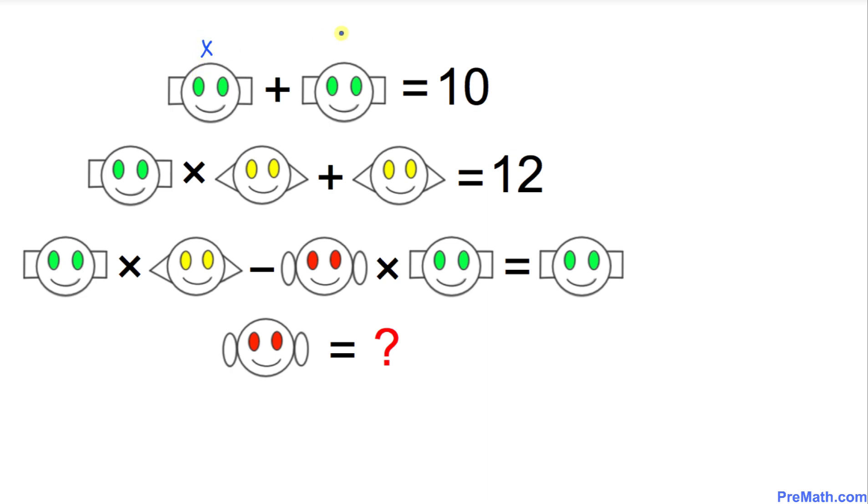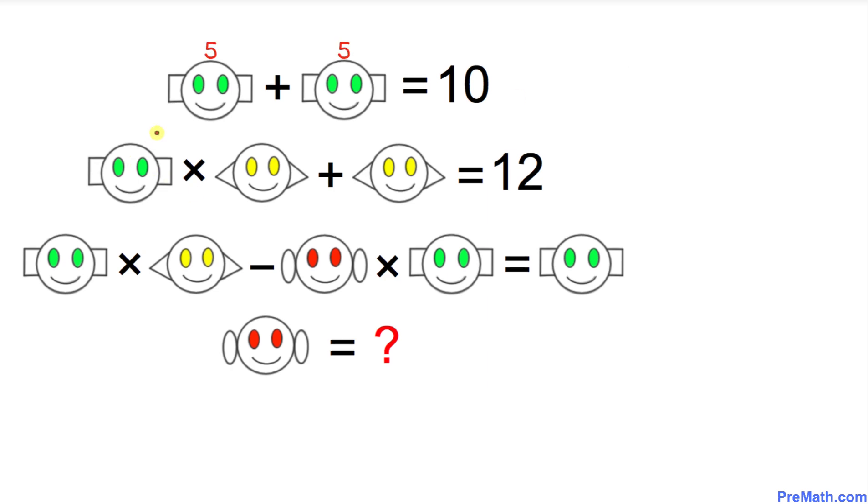Let's look at these first two green happy faces. I'm going to call each green face x. So x + x = 10. I'm going to write down x + x = 10, which means we got 2x = 10. Divide both sides by 2, so the x value turns out to be 5.